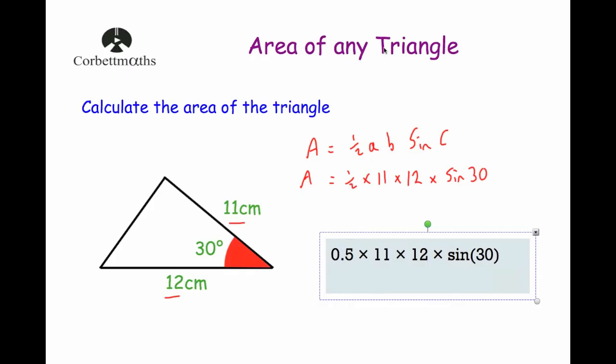I could write ½ by the way instead of writing 0.5, but I've just written 0.5. You could write 0.5 or ½ times 11 times 12 times the sine of 30, and when you do that you're going to get the answer of 33. That means the area of this triangle is equal to 33 centimeters squared. Make sure you include the right unit, centimeters squared. And that's it, so that's the area of a triangle.